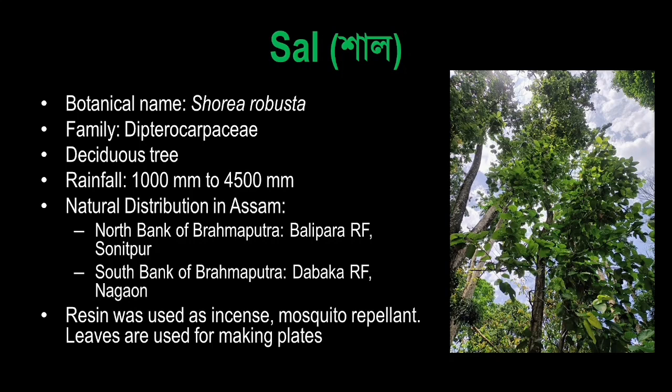The wing is dispersed — the wing is very big. So the result is a deciduous tree, and rainfall ranges from 1,000 to 4,500 mm. Natural distribution is on the North Bank of Brahmaputra, Balipar RF, Sunitpur, South Bank of Brahmaputra, and Dabaka RF.